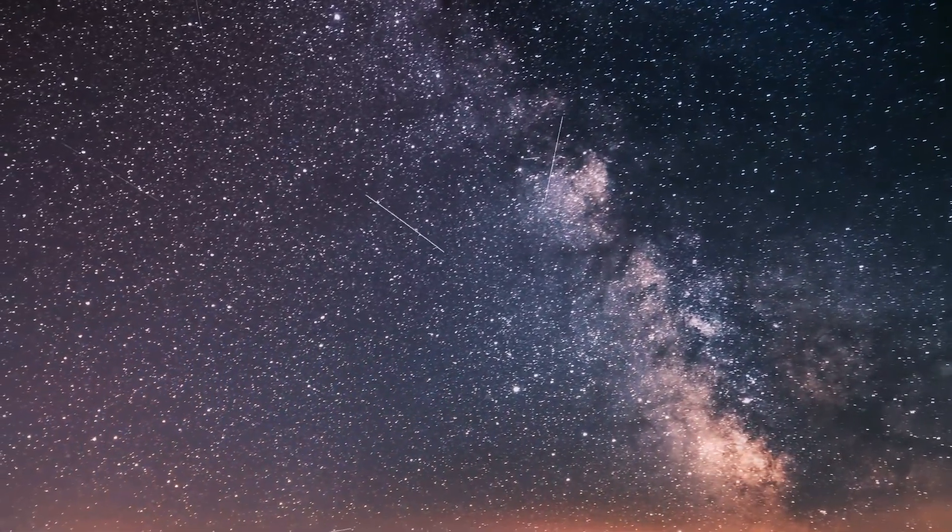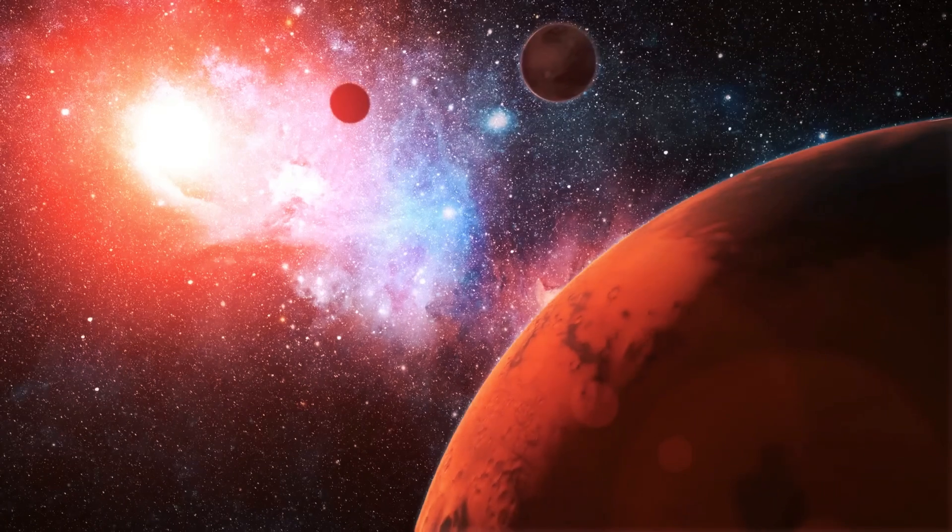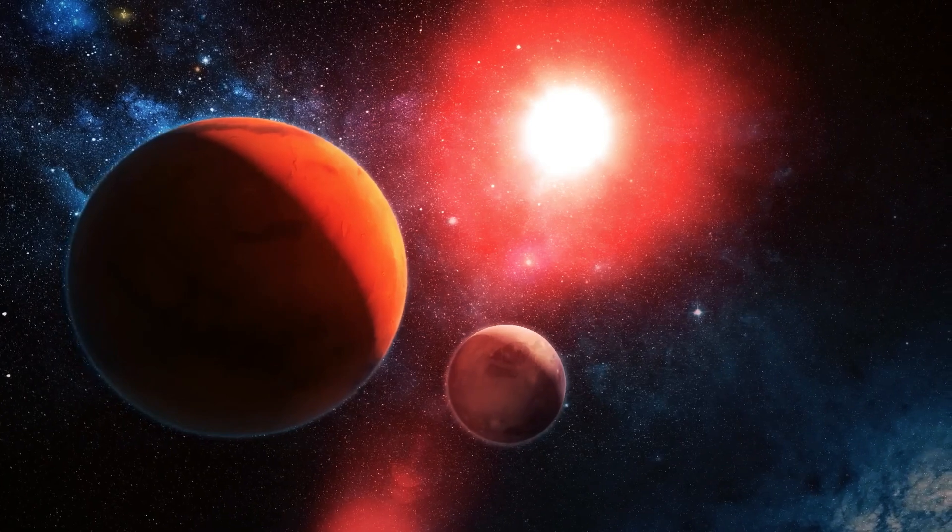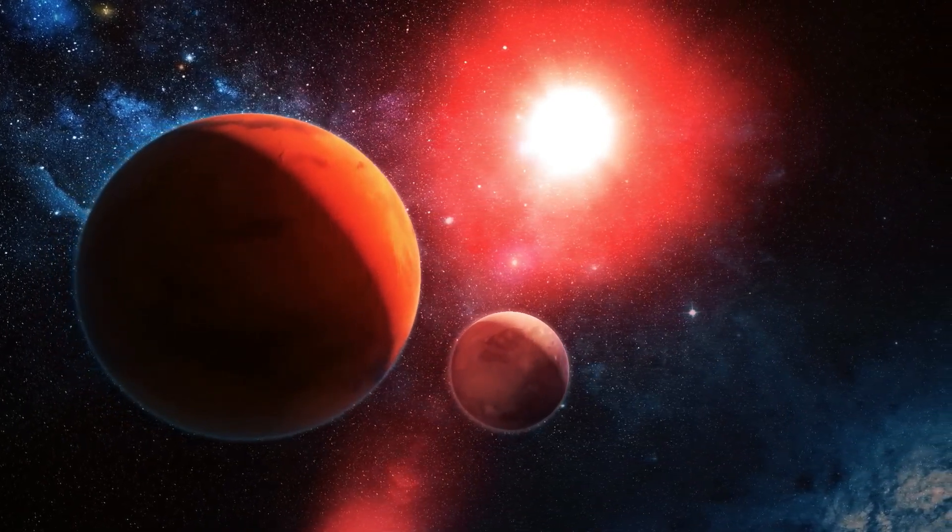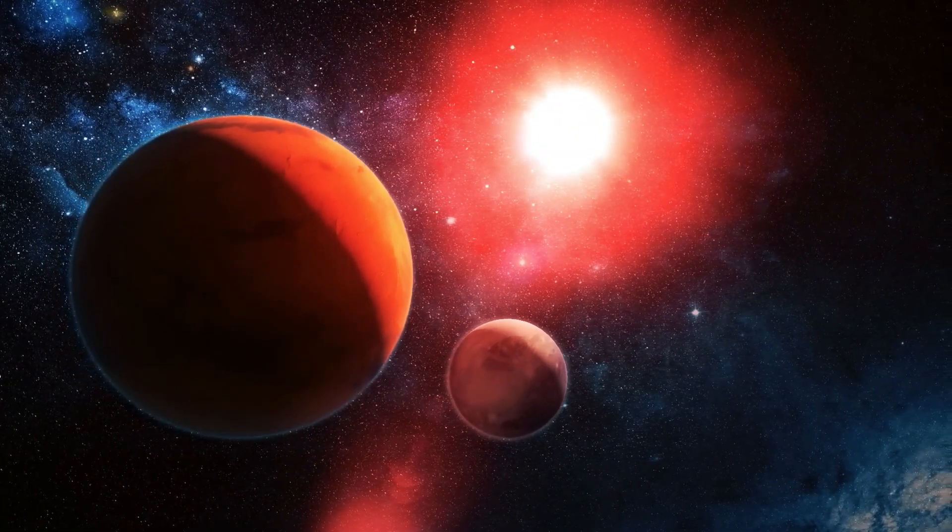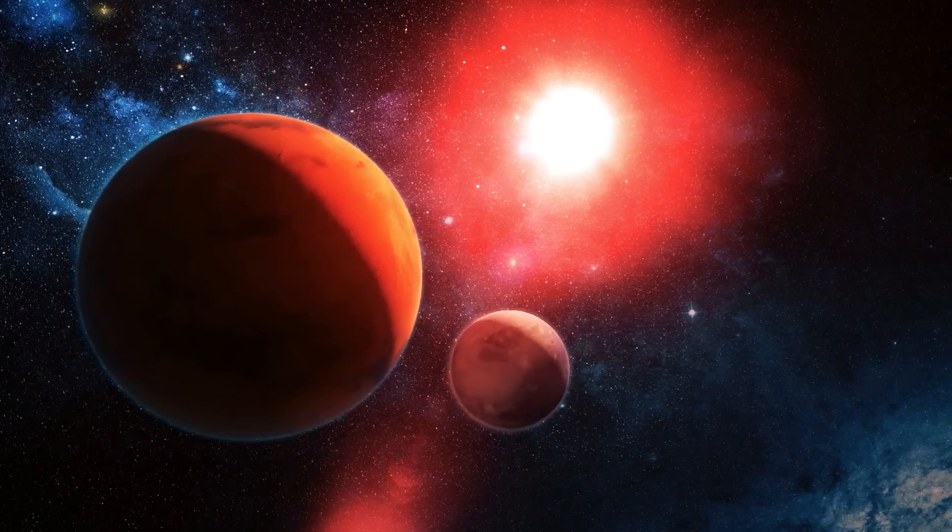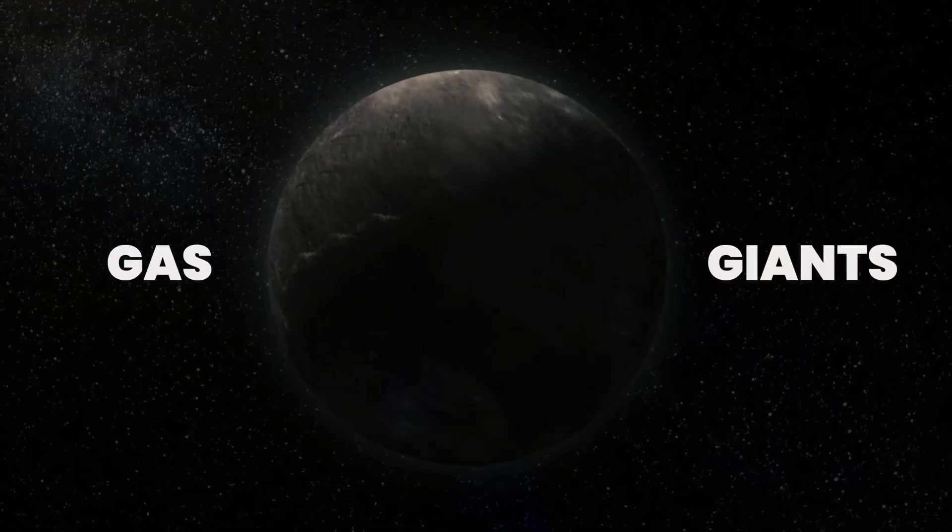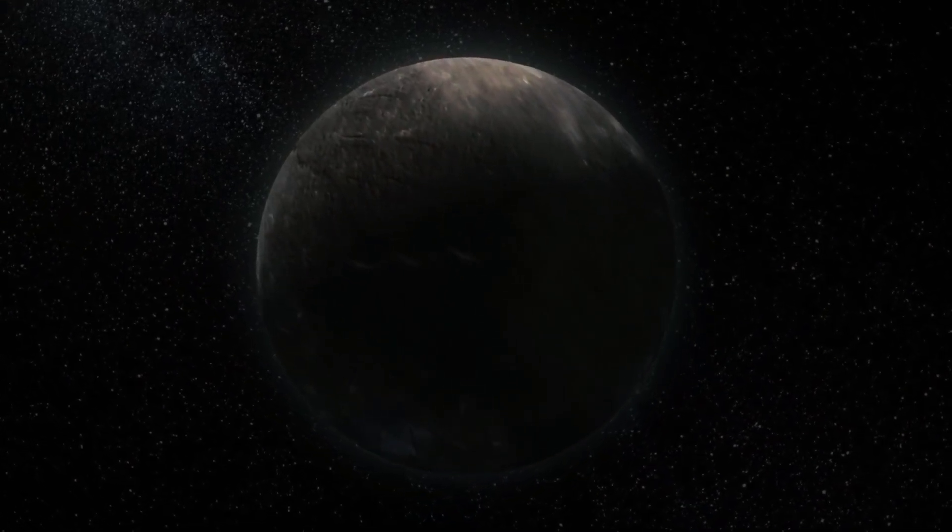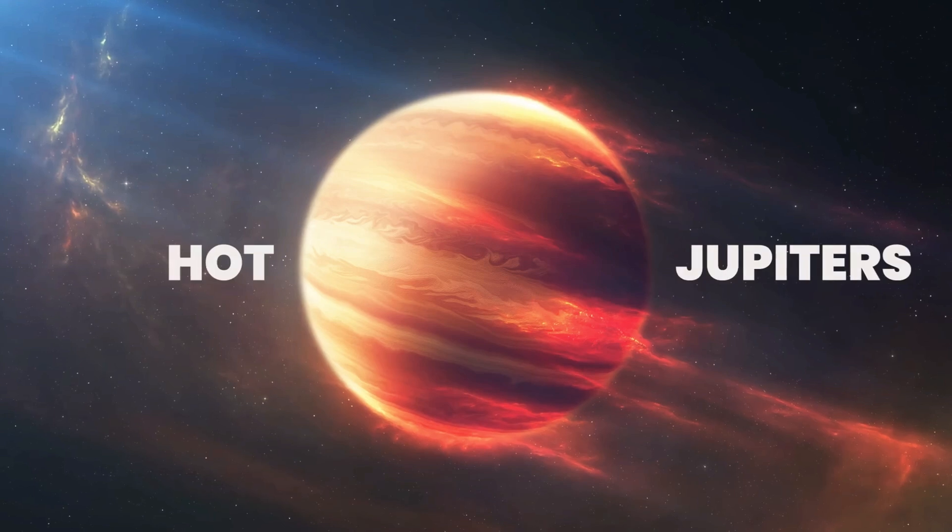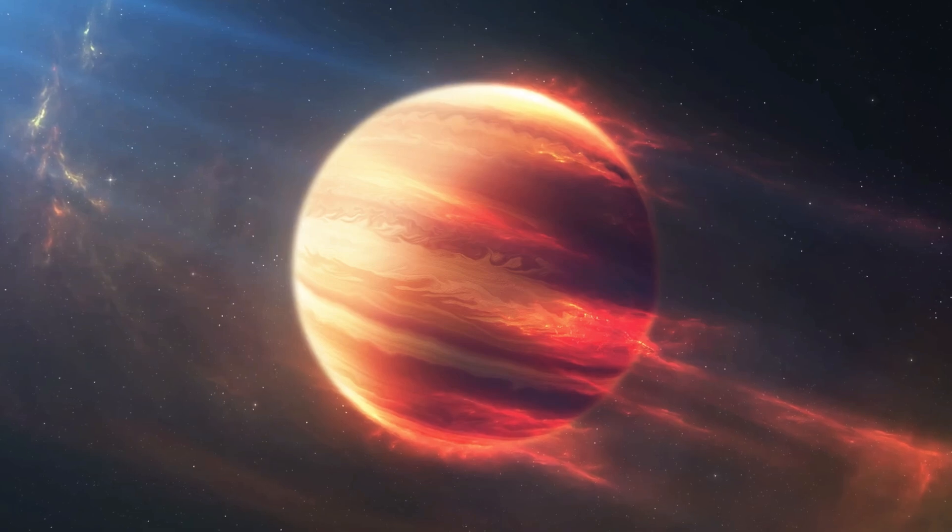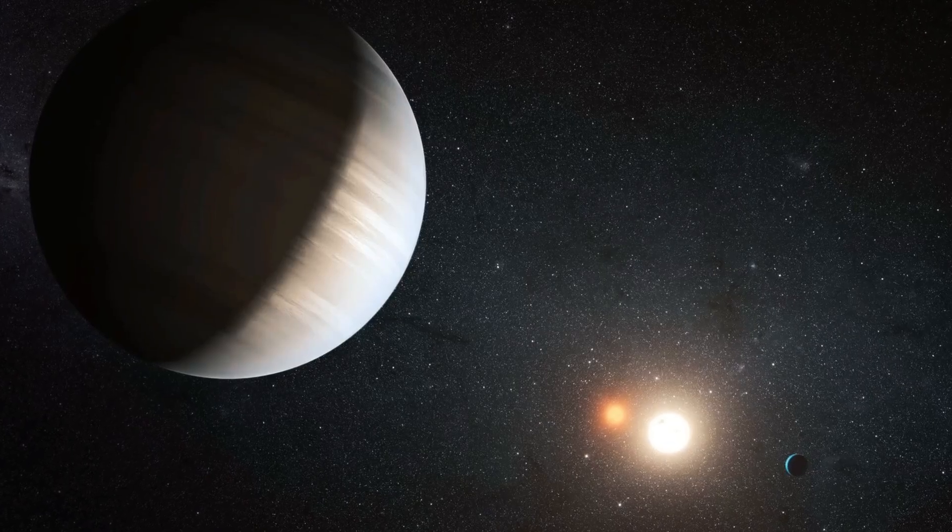Kepler not only focused its efforts in finding potentially habitable planets. In fact, the bulk of its discoveries were strange worlds not suitable for life, but fascinating nonetheless. Like the gas giants, planets composed mostly of gases such as hydrogen and helium, with a relatively small rocky core, also known as hot Jupiters. These planets orbit extremely close to their parent stars and are abundant in Kepler's data.